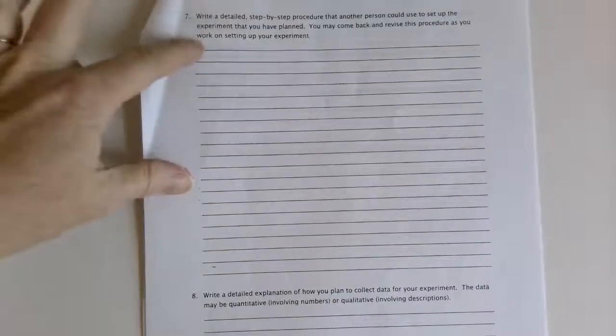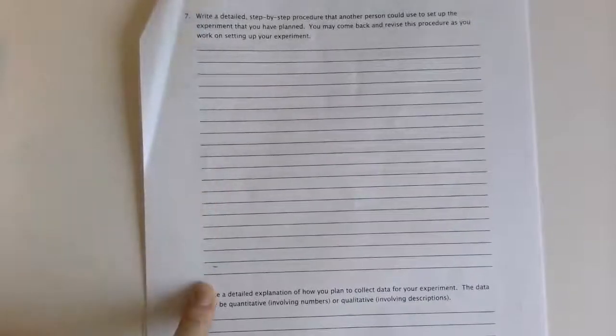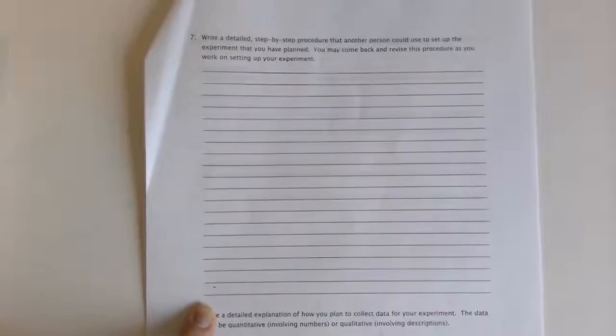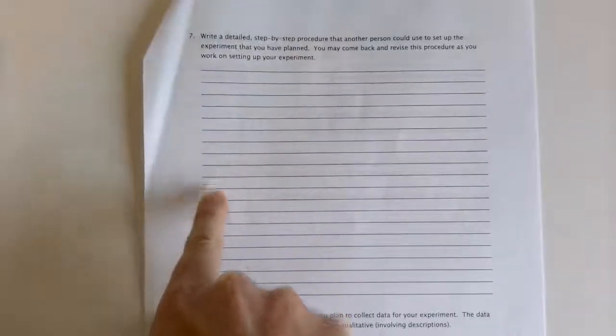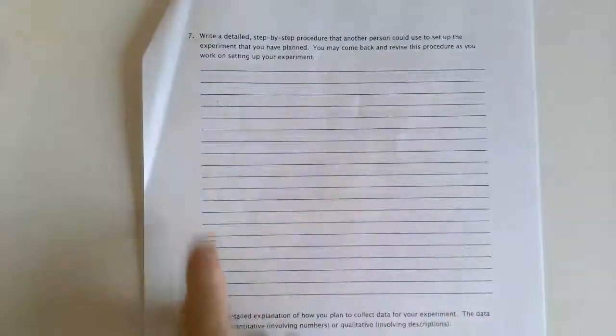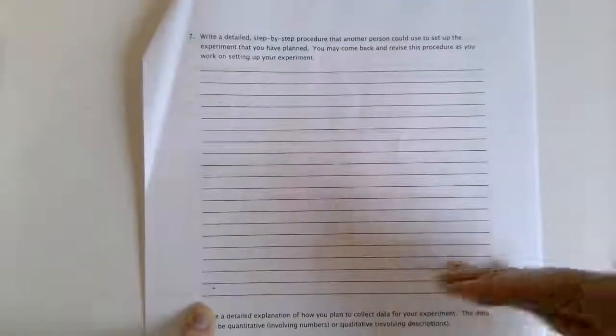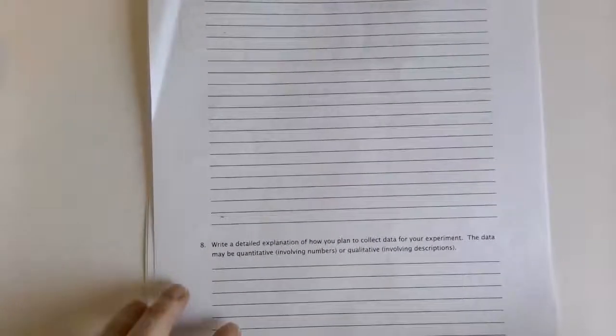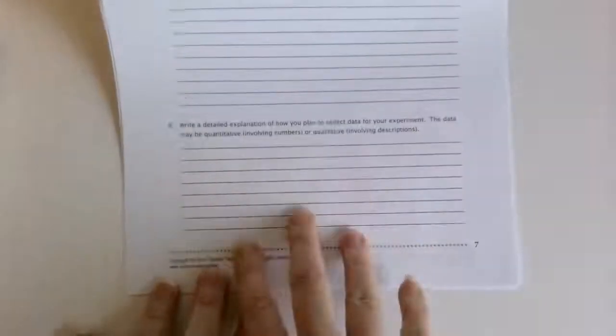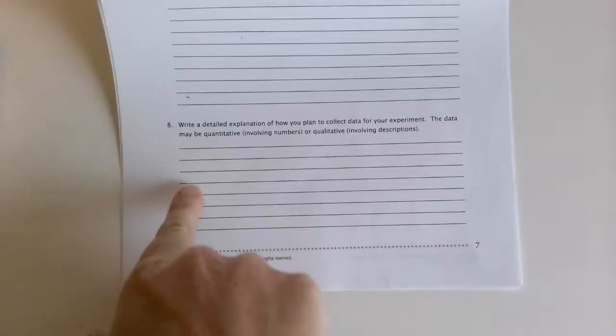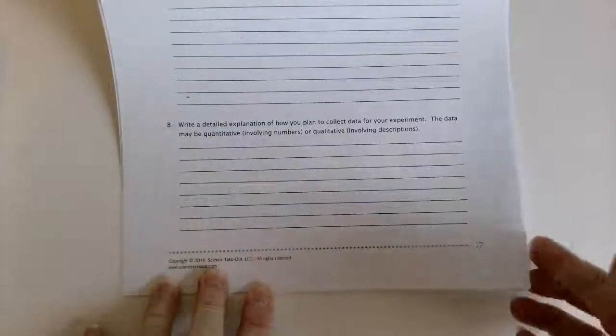So this is page seven on this packet. You're going to write a step-by-step procedure. Okay, when it says step-by-step procedure, what that means is that you actually have it numbered out in steps. So this isn't paragraph writing, this is numbered out in steps so that somebody could follow it like a recipe. Then you're going to write a detailed explanation of how you're going to collect the data.